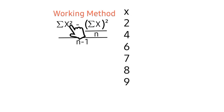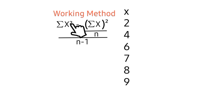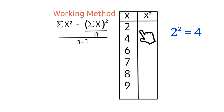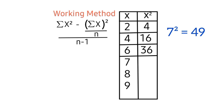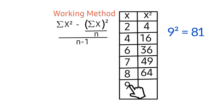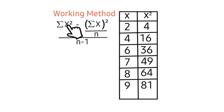Looking at the working formula, we have summation x², which means we are expected to create a column for x². Let's fill up this column: 2² gives 4, 4² gives 16, 6², 7², 8², and lastly 9² gives 81. We have summation x², meaning we are expected to add up all these values.